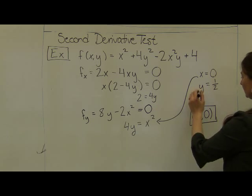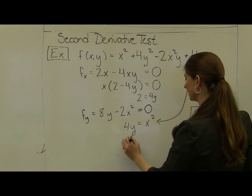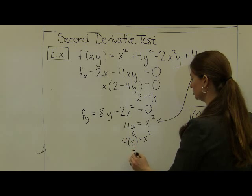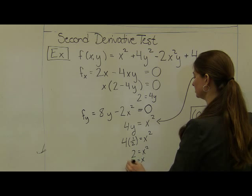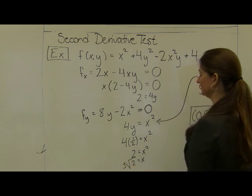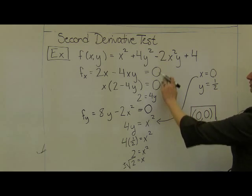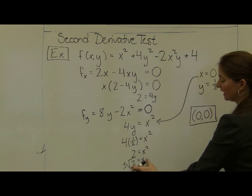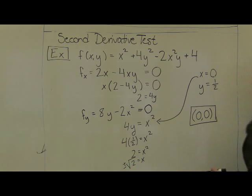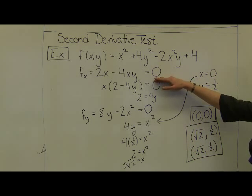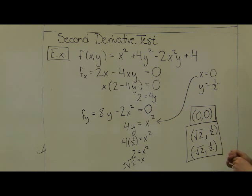Plugging in y = 1/2 gives 4(1/2) = x², so x² = 2, meaning x = ±√2. This yields two more critical points: (√2, 1/2) and (−√2, 1/2). These are all the places where both partial derivatives equal zero, so we've found all three critical points.